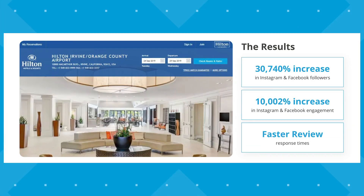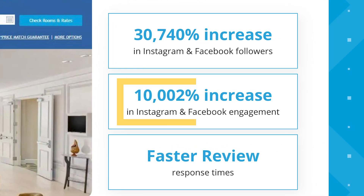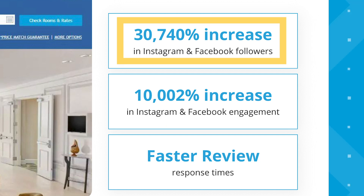We actually did the same thing for Hilton Hotels. Hilton came to Life Marketing to increase their social media engagement and followers. As you can see, we were able to increase their Instagram and Facebook engagement by over 10,000 percent. And subsequently, we increased their Facebook and Instagram followers by a whopping 30,000 percent.